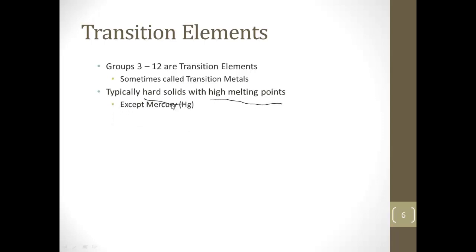With the exception of mercury, which as you already know is a liquid, they are much less reactive than groups 1 and 2. And then they will form ions that have color due to half-filled orbitals. We're going to talk about orbitals in just a few moments.